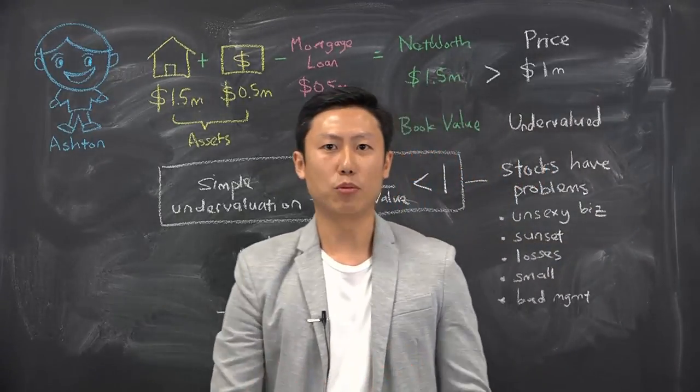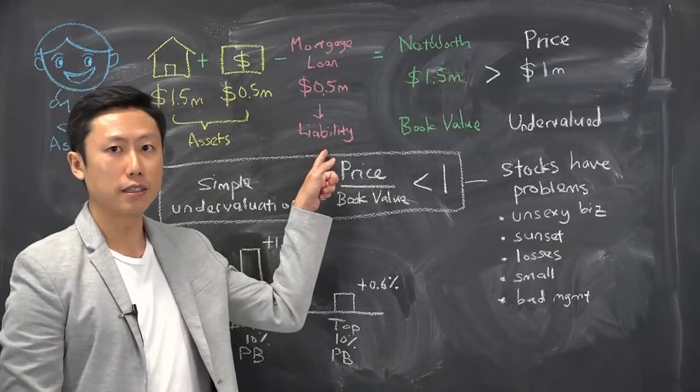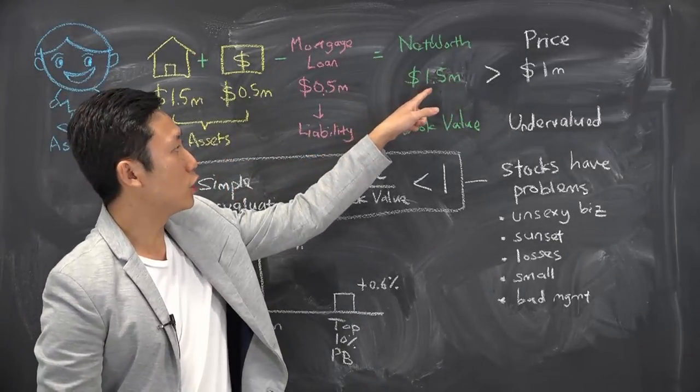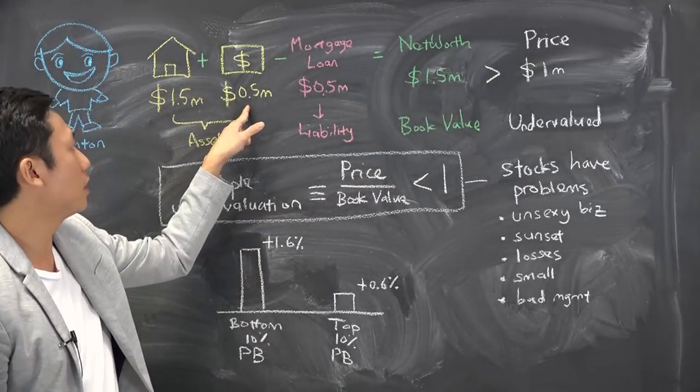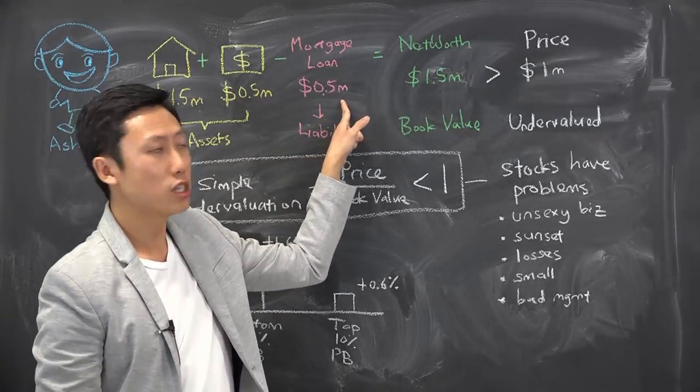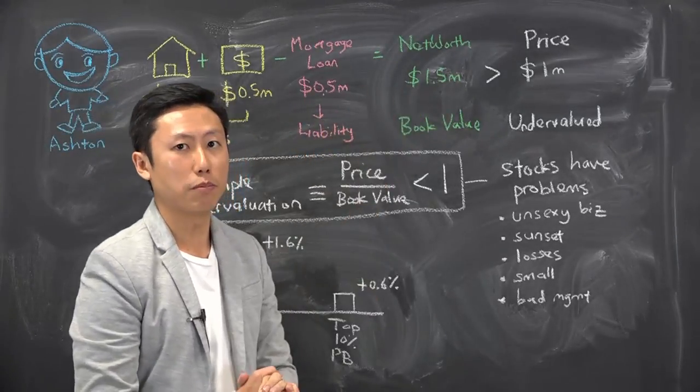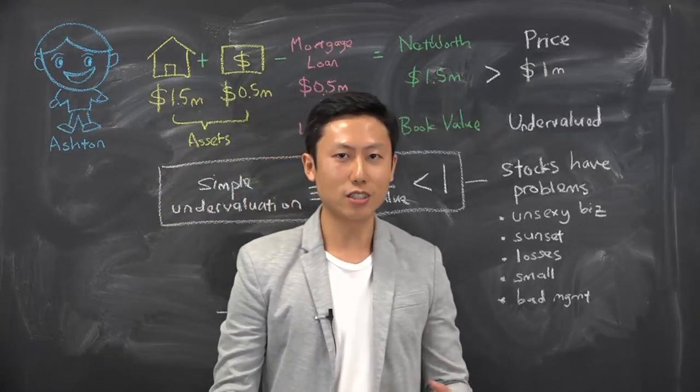Usually people ask what's the net worth. Net worth essentially is having the assets minus the liability. That will give you in Ashton's case $1.5 million, because $1.5 plus $0.5 is $2 million, and minus $0.5 million of mortgage, he'll get $1.5 million net worth.